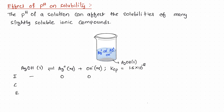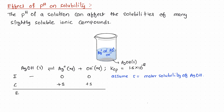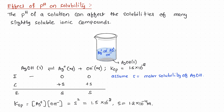Let us assume that S is the molar solubility of silver hydroxide — that is, S moles of silver hydroxide dissolved in 1 liter of water. Therefore, S moles of Ag⁺ and S moles of OH⁻ are formed. At equilibrium, we have S molar each of Ag⁺ and OH⁻ ions. Substituting the equilibrium concentrations into the Ksp expression and solving for S, we get the solubility of AgOH, which comes out to be 1.2 times 10 to the negative 4 molar.